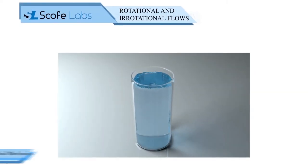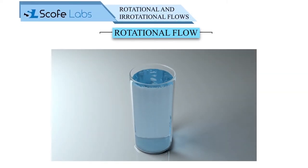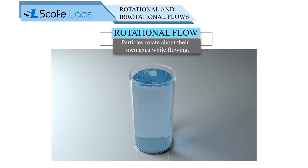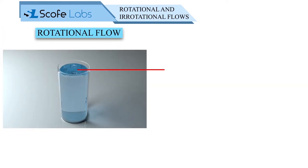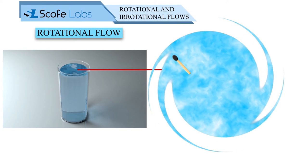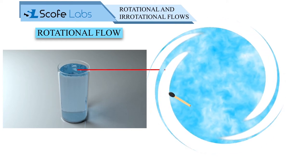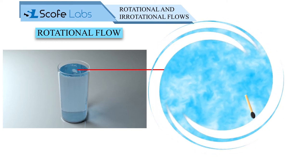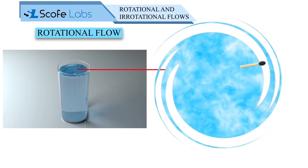The flow in which the fluid particles also rotate about their own axis while flowing is called rotational flow. Let us put the matchstick on the rotating fluid — it can be seen that the matchstick also rotates about its own axis.